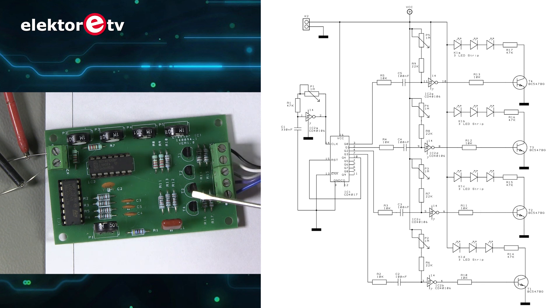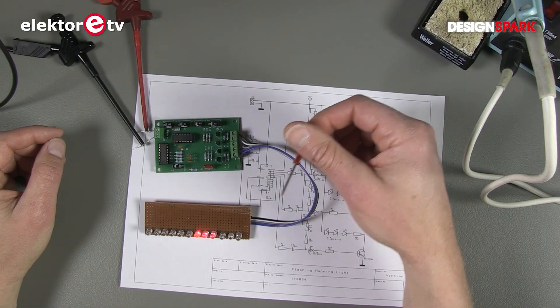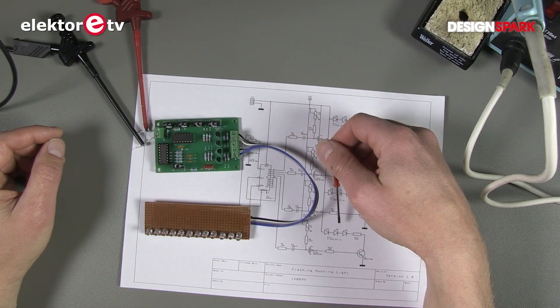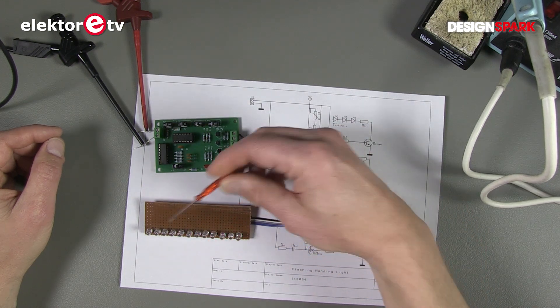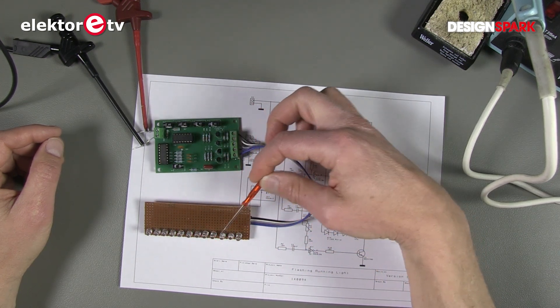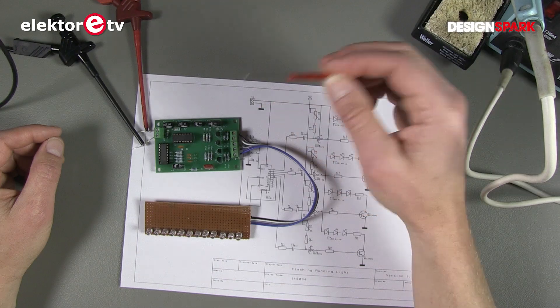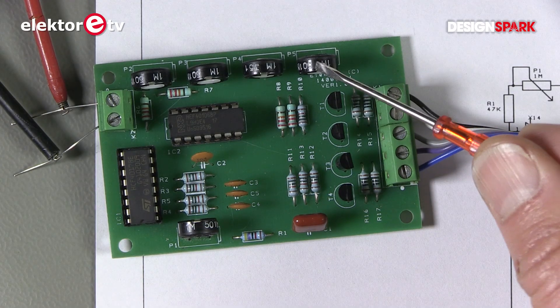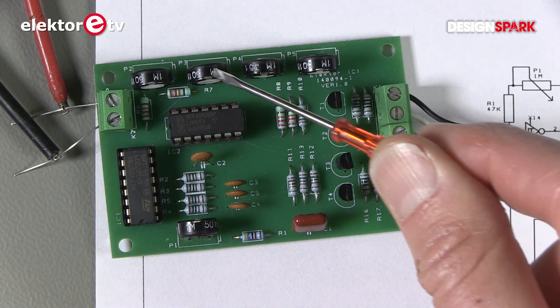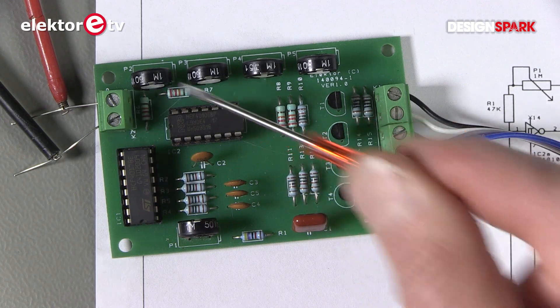The special thing about this flashing running light is that you can control the brightness of the flash per group of three LEDs. So we have 12 LEDs, four groups of three. On the PCB we have four trimmers and these trimmers control the brightness of one of these groups.